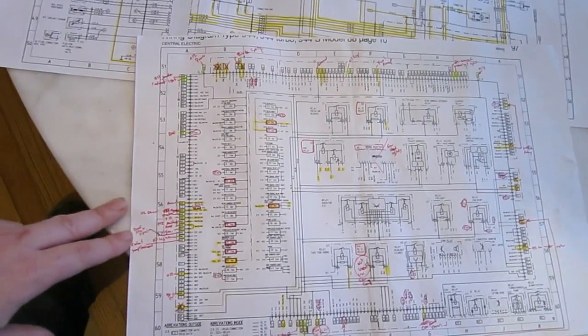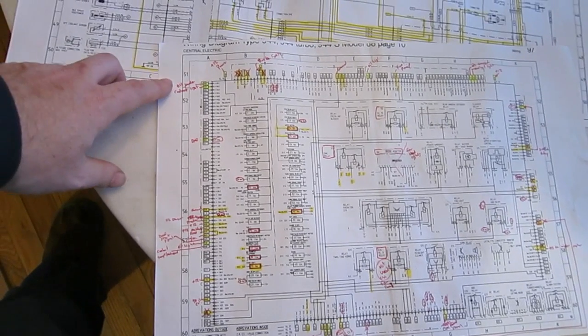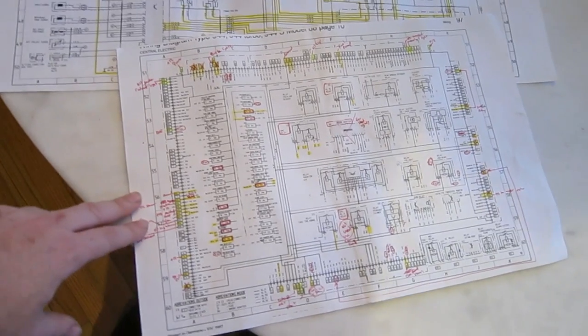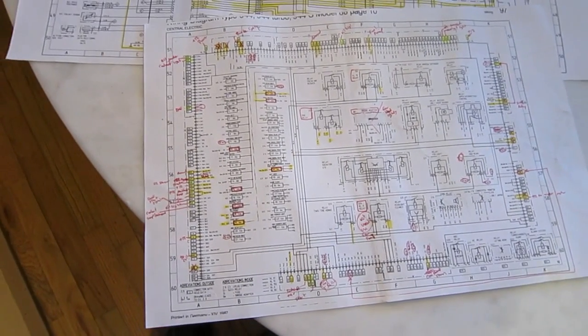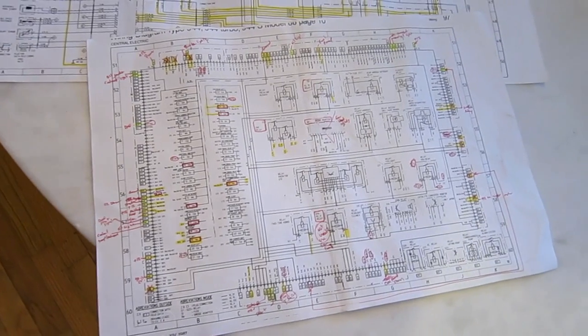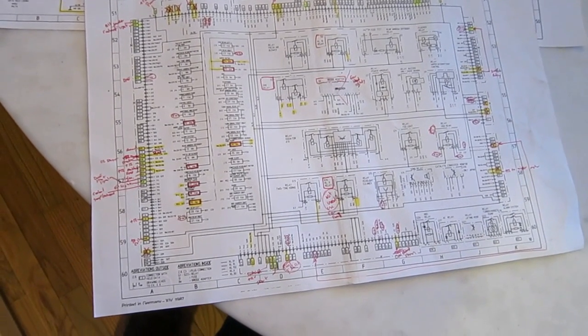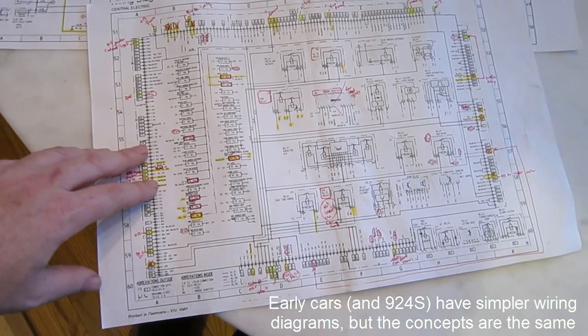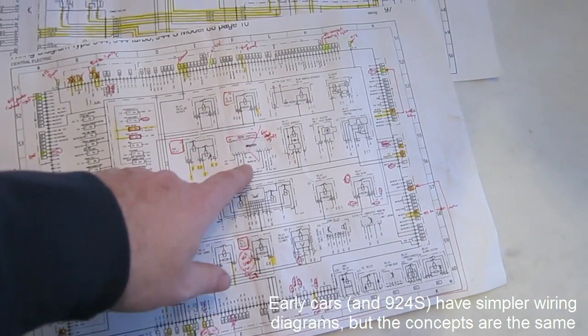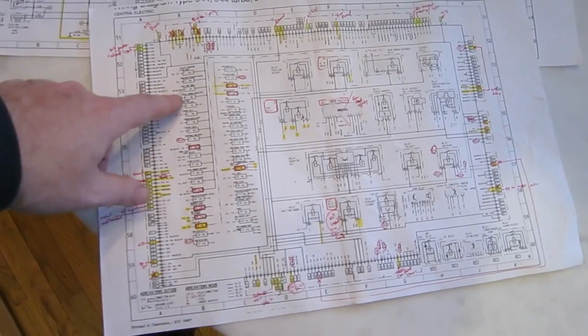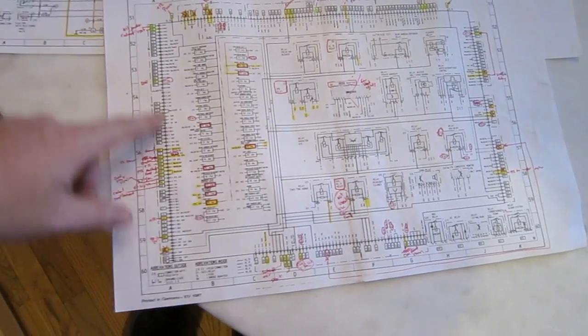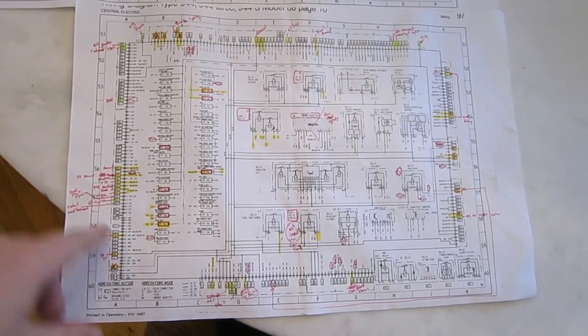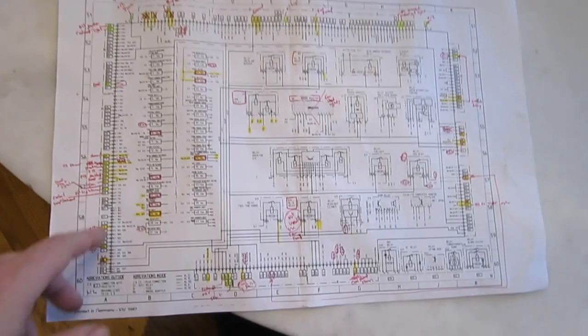And then the last one here, this is 51 through 60, and this is actually the fuse block. This is the 85 and a half and later cars that have the fuse panel under the hood by the driver's side, it has the big fuse block. So these are all your relays that are inside that fuse block, and then these are all the fuses here. So the perimeter of the fuse block has all the connections to the other sheets in the diagram, or to the rest of the car.